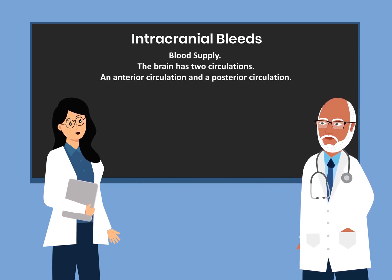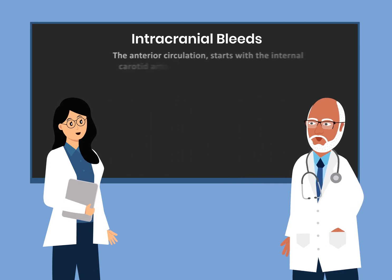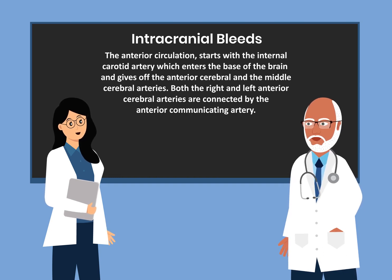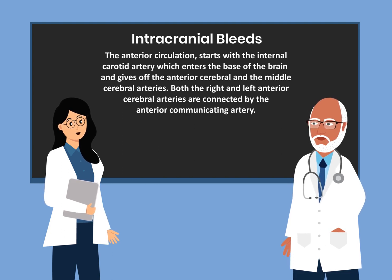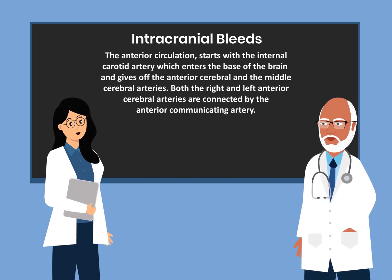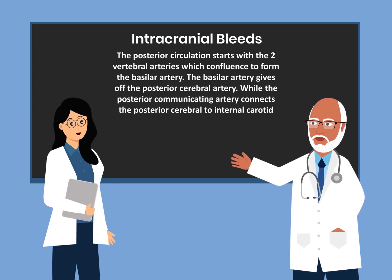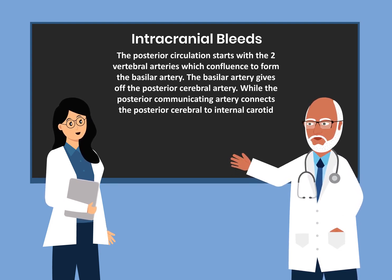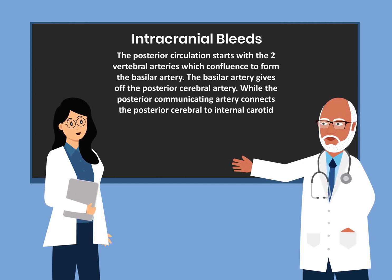Let's talk about the blood supply. The brain has two circulations: an anterior circulation and a posterior circulation. The anterior circulation starts with the internal carotid artery, which enters the base of the brain and gives off the anterior cerebral and the middle cerebral arteries. Both the right and left anterior arteries are connected by the anterior communicating artery. The posterior circulation starts with the two vertebral arteries, which confluence to form the basilar artery. The basilar artery gives off the posterior cerebral artery, while the posterior communicating artery connects the posterior cerebral to the internal carotid.